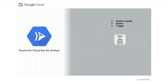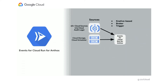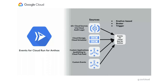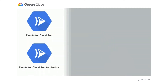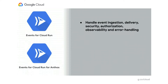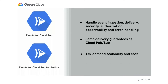Events for Cloud Run for Anthos is Knative-based and incorporates the concepts of Knative brokers and triggers. With it, you can act on events sourced from all Google Cloud sources via Cloud Audit Logs, with Cloud Storage and Cloud Scheduler as native integrations, custom applications publishing to Cloud Pub/Sub, and also custom events. You can target Cloud Run for Anthos targets, Kubernetes services, and any URL. Both offerings handle event ingestion, delivery, security, authorization, observability, and error handling for you. They both have the same delivery guarantees as Cloud Pub/Sub — at least once delivery — and provide on-demand scalability. You can operate both through a UI, CLI, or API interface.